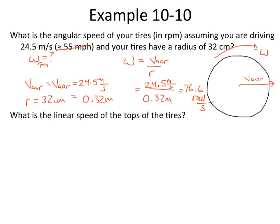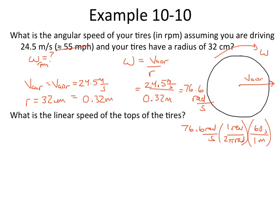That gives us 76.6 radians per second. But we want it in RPM, so let's do a unit conversion: 76.6 radians per second, times 1 revolution per 2π radians, times 60 seconds per minute. Radians cancel, seconds cancel, and we get revolutions per minute. Crunching the numbers: 76.6 times 60 divided by 2π gives us 731 revolutions per minute, or RPM. That is the angular speed of our tires — every part of that tire is rotating at that rate.